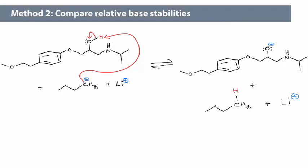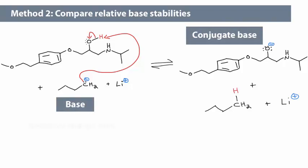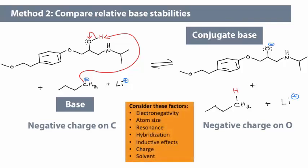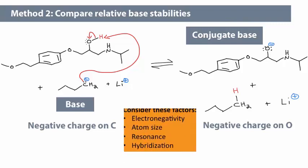Now we'll compare the relative stability of the charge species, in this case the base and the conjugate base. The charge resides on a carbon atom in the base, and on an oxygen atom in the conjugate base. Given the two bases, which factors should be applied? Because these two atoms are in the same row of the periodic table, electronegativity differences dominate.